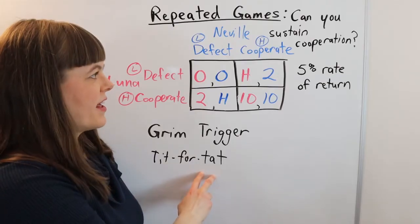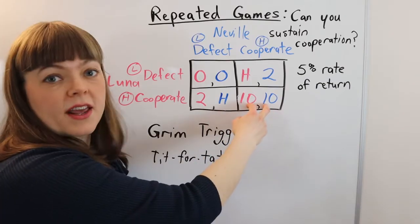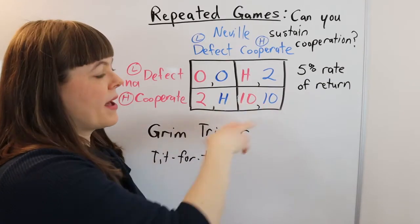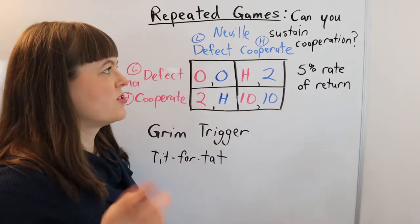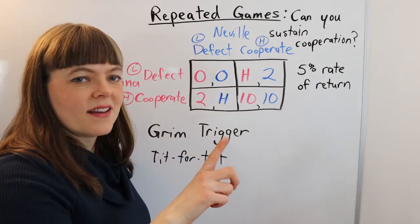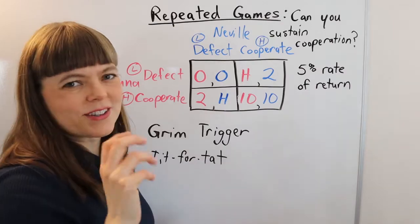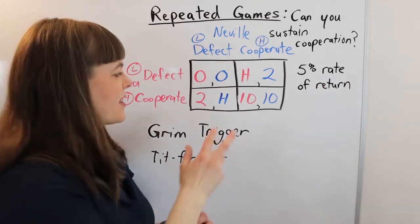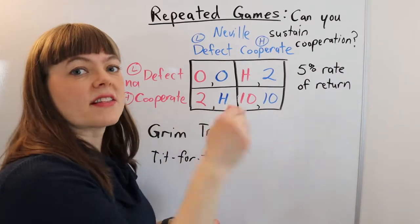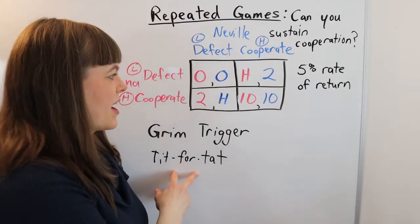So the basic strategy for tit for tat is I will start out by cooperating in the first round, but every round after that, I'm going to do whatever my partner did or whatever my opponent or cooperator, whoever that is, I'll do whatever they did the last round. That's tit for tat.